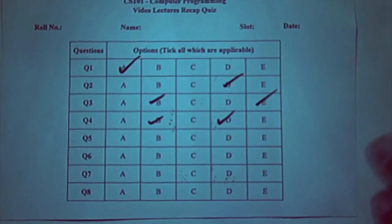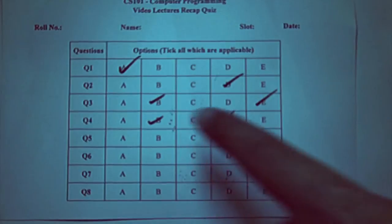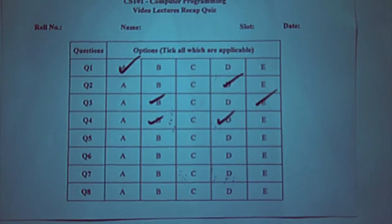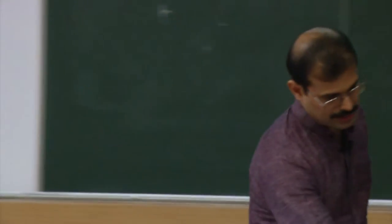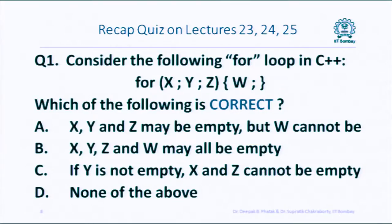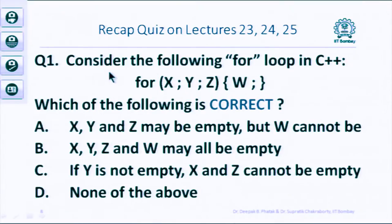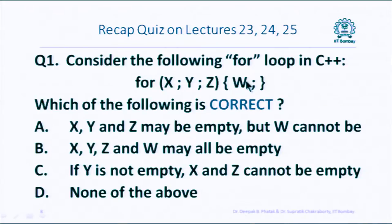We may not have all 5 options for every question, but up to 5 options will be given and you have to tick all that are applicable. Some questions have one correct option. For example, this is just a sample — there is a for loop in C++ where the different placeholders have been filled with x, y, z, and w, and you are required to tell us which of the following statements is correct.